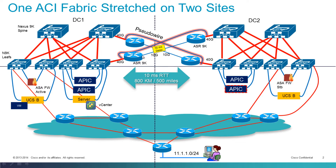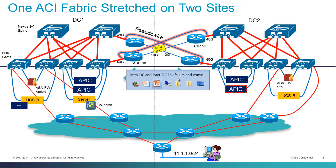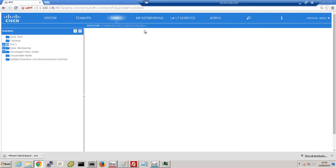That ASR 9K has a 10-gig link towards the remote data center, and the other ASR has a 40-gig port towards the spine. We leverage a port-based Ethernet over MPLS cross-connect so that leaf 4 and spine 3 think they are directly connected. Between them there is Ethernet over MPLS going across a 10-gig link with 10 milliseconds of round-trip time delay, allowing deployment in data centers physically up to 800 kilometers or 500 miles apart.